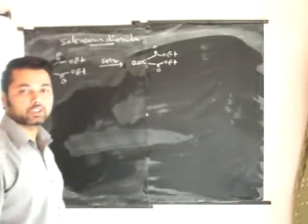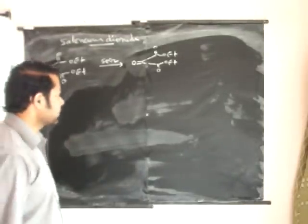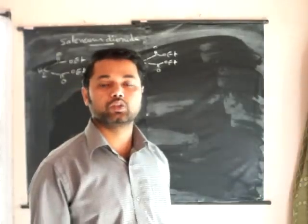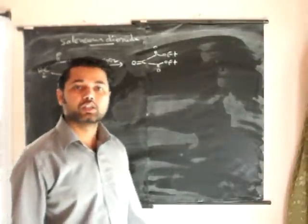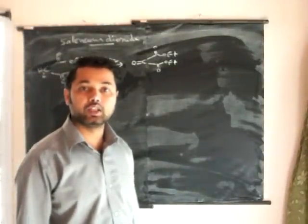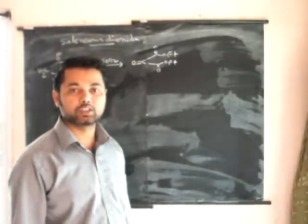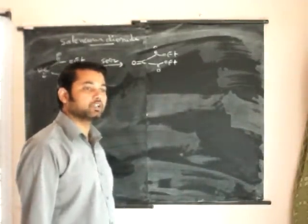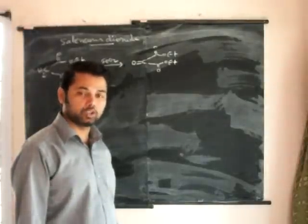These examples are sufficient for this discussion regarding oxidation of active methylene compounds - that means the methylene groups which are adjacent to electron-withdrawing groups. Now let us see the function of selenium dioxide in allylic oxidation reactions, that means allylic carbons - the carbon which is adjacent to an alkene group.